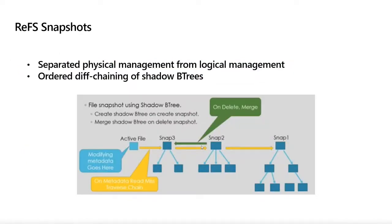Under the hood, we've separated data management from metadata management through what we call ordered diff chaining of shadow B-trees. Those familiar with ReFS know we use B+ trees throughout, with Merkle checksumming — hierarchical checksumming — to ensure all data is correct at any given time. When a snapshot is created, we create a new shadow B-tree. If a snapshot is deleted, we can merge those two together to make things congruent again. When reading metadata and there's a miss, it traverses the chain down until it finds the right place to read.